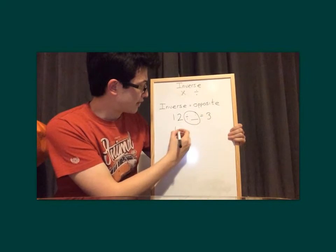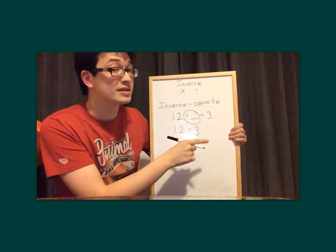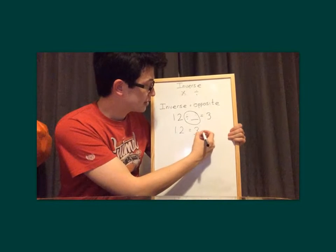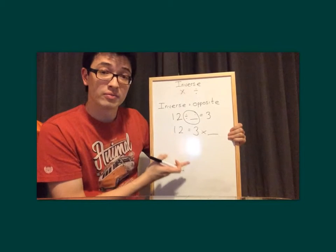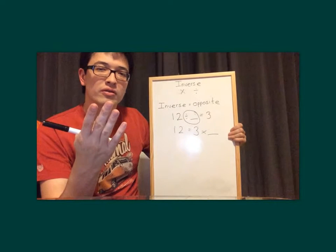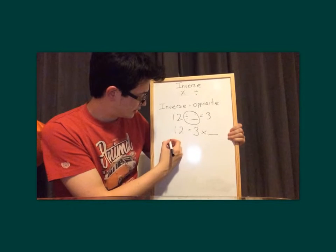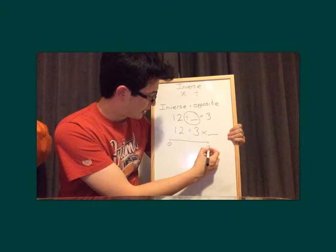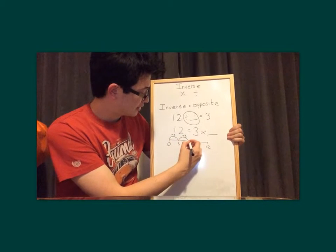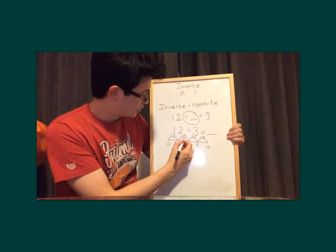So now it looks like this: 12 equals 3... and remember, what happens to the operation when it moves to the opposite side? It becomes the opposite — so the divide becomes a times. So 3 times something equals 12. We still have a missing number, but now we know our times tables, which will help us. So what can we times by 3 to get 12? Let's draw a quick number line: 0 add 3 is 3, 3 add 3 is 6, 6 add 3 is 9, 9 add 3 is 12. Counting the jumps: 1, 2, 3, 4.